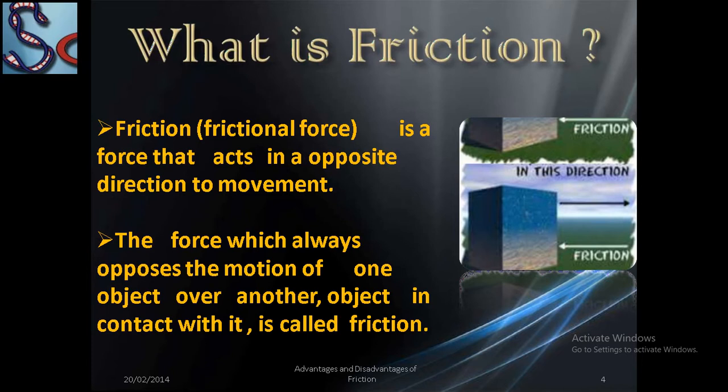Friction is a force that acts in the opposite direction of movement, and the force which always opposes the motion of one object over another object in contact with it is called friction. For example, if you place your hands close together and rub them against each other, when both hands are in contact during the rubbing you feel some heat because of the presence of friction.